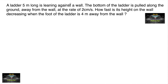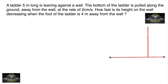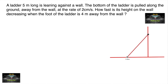A ladder 5 meters long is leaning against a wall. Let us assume there is a wall at ground level and a ladder leaning against it which is 5 meters long. The bottom of the ladder is pulled, and as a result there is a corresponding decrease in the height of the wall.